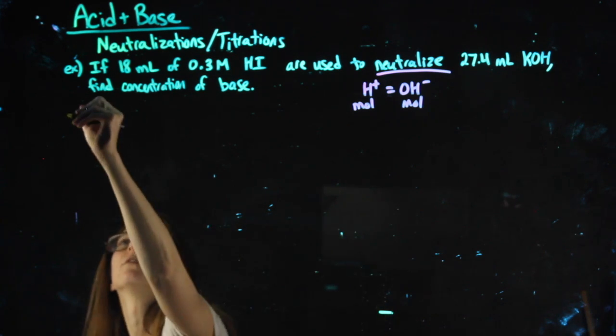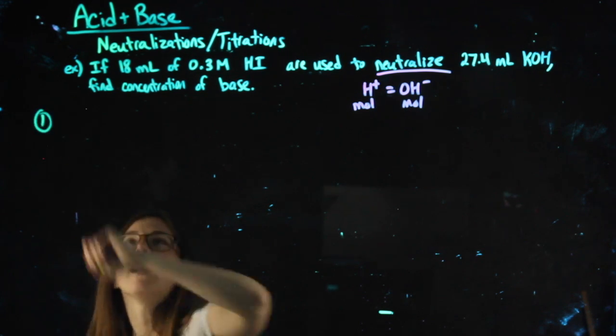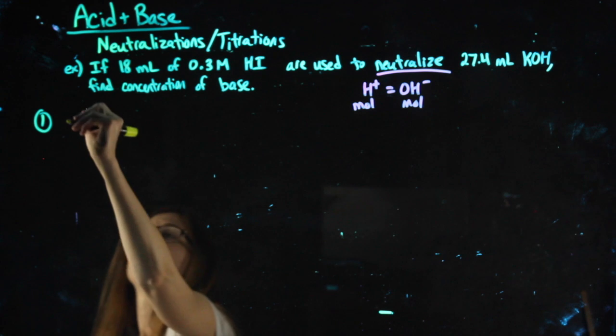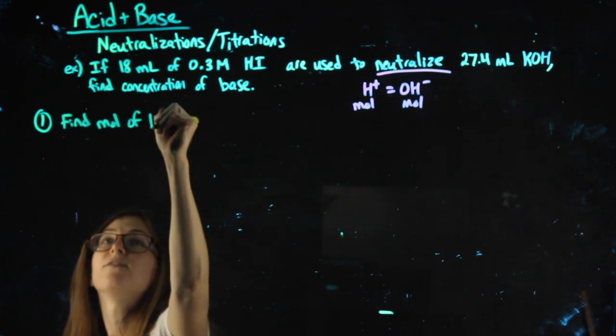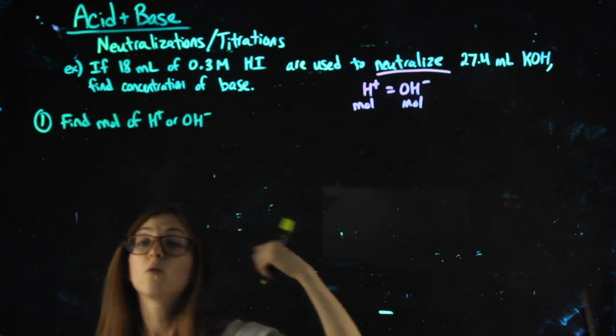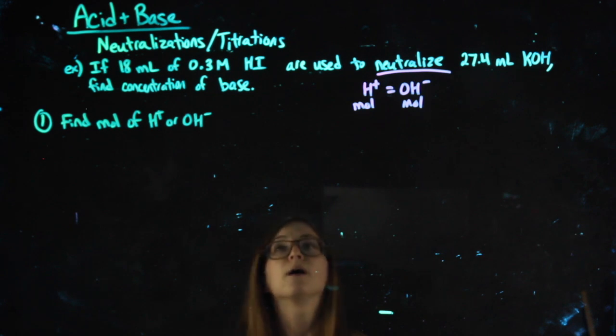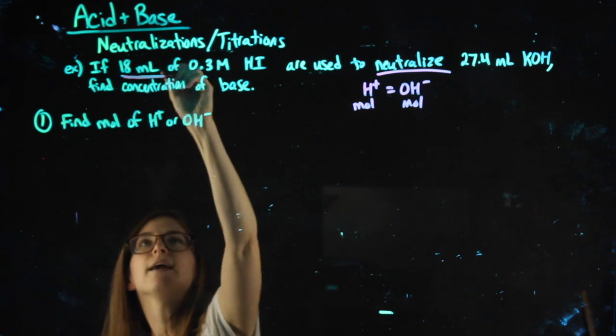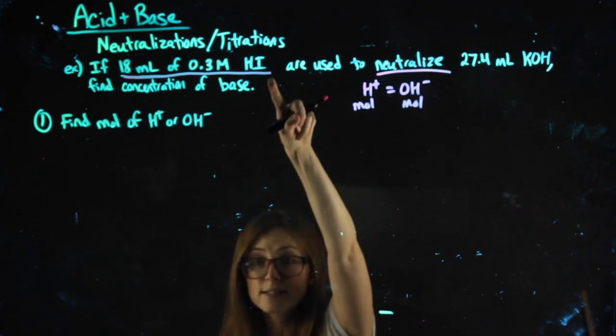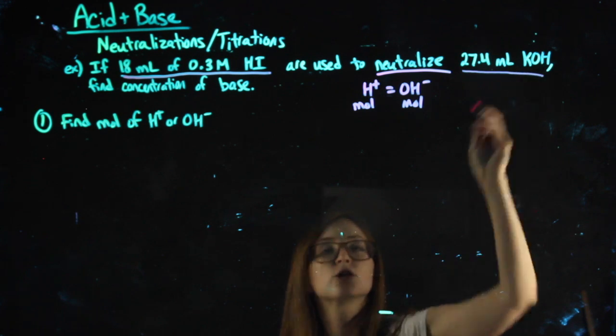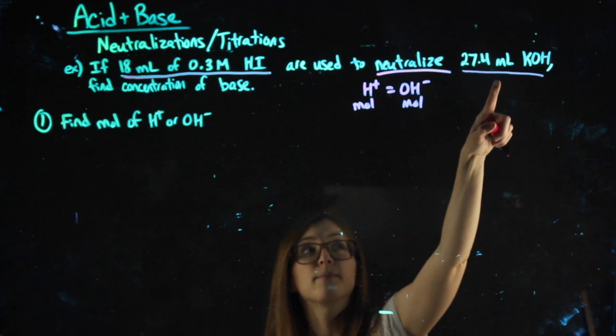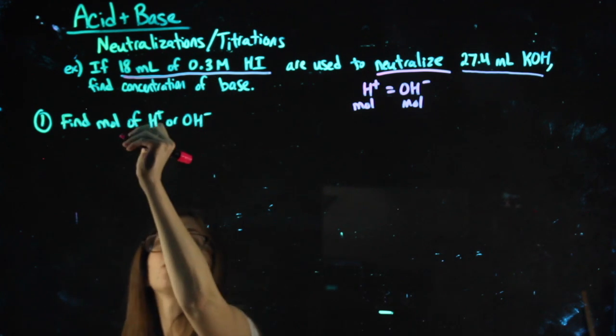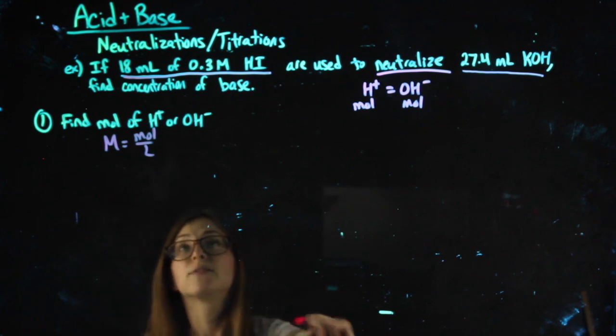Okay, our first step in solving this is we want to start by finding moles, either of H+ or of OH-, whichever one we can. And it'll depend on the question, but you want to find moles of H+ or of OH-, whichever one you can. So in this question, I see 18 milliliters of 0.3 molar. That's an acid. And I see 27 milliliters of the base. Now, I don't have the molarity of the base, so I can't use that number yet. In this case, I do have this molarity and this volume. So using the molarity formula, I'm going to be able to find the moles of my acid.